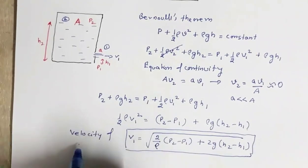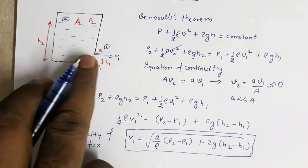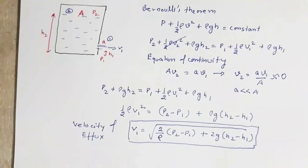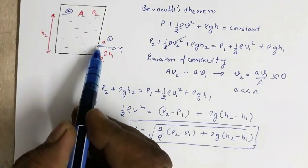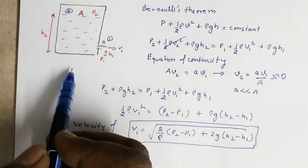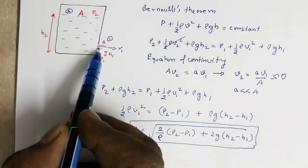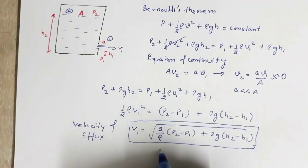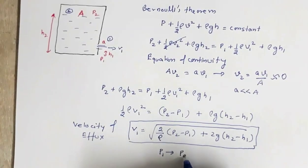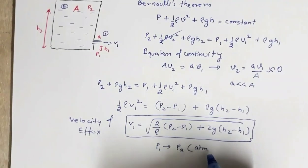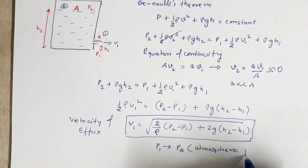The velocity of efflux is the velocity with which the liquid comes out through the opening. Since the opening is exposed to the atmosphere, the pressure at that point equals atmospheric pressure. So p1 can be replaced by pA, where pA is the atmospheric pressure.